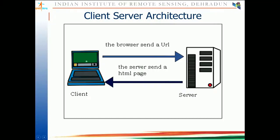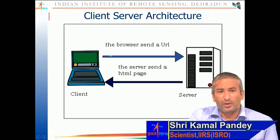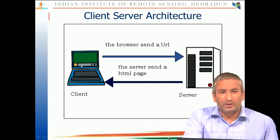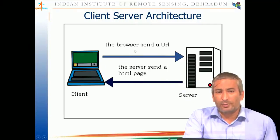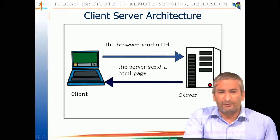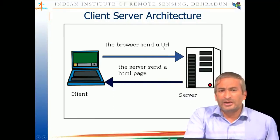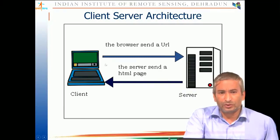If you talk about client-server architecture: you, as a user or a particular person, are termed as a client. These clients make a request to a central server — just like when you type google.com in a browser, you are sending a request to the Google server. The request goes through the browser to the server using protocols — HTTP, FTP, SMTP; many protocols are there. The most popular one in a Web GIS environment is HTTP, and HTTPS is the secured version.